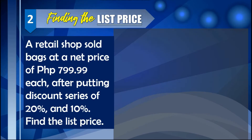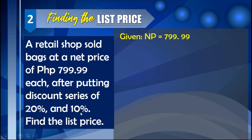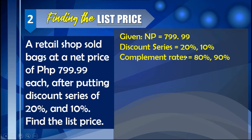Second example: finding the list price. A retail shop sold bags at a net price of 799.99 after applying a discount series of 20% and 10%. Find the list price. Here the net price is given as 799.99, and the complement rates are 80% and 90%.